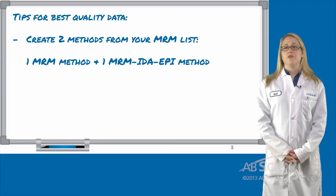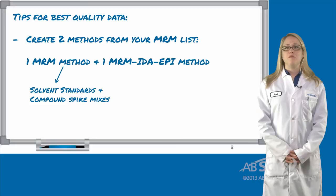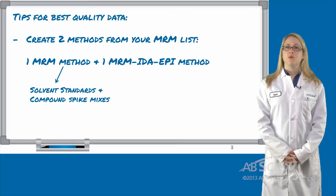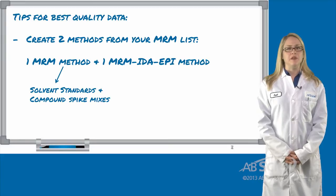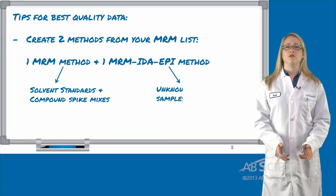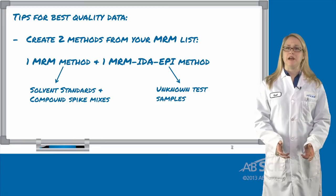We suggest you run your mixes that contain your target compounds, like standards or matrix spike samples, with your standard MRM acquisition method, no IDA EPI triggers, and run your unknown samples using the MRM IDA EPI method.